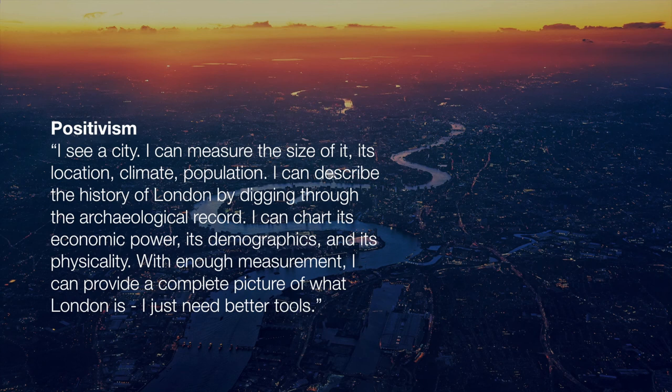If a positivist were to analyze a picture like this — a picture of the city of London — they might say they can see the city, they understand the physical reality of it, they can measure the size of its location, climate, and population. They can describe the history of London by digging through the archaeological record, they can chart economic power and demographics and physicality. With enough measurement, they'll be able to create a complete picture of what London is — all they need is better tools.